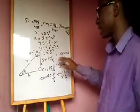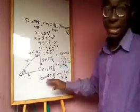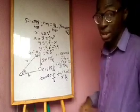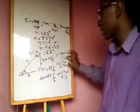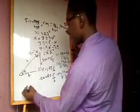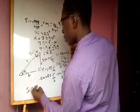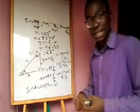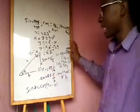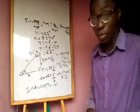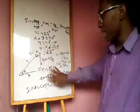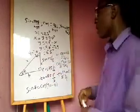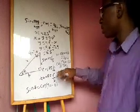Now let's identify the relationships. We can see that sine theta, which is c over a, is the same as cosine of (90 minus theta), which is also c over a. So sine theta equals cosine of (90 minus theta). Similarly, cosine theta equals sine of (90 minus theta). You should write these relationships down in your notes.